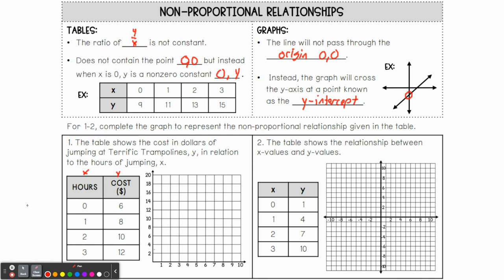So at zero hours, there is a cost of $6. At one hour, there's a cost of $8. Two hours, there's a cost of $10. And for three hours, you're going to pay $12.